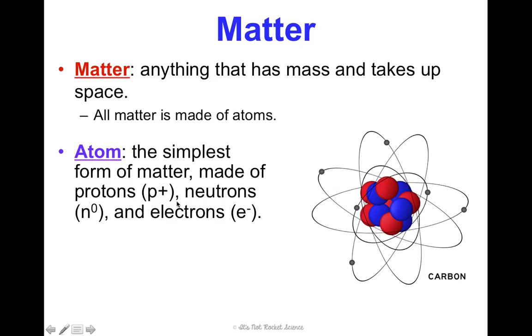Atoms also contain neutrons, which have a neutral charge, so they are N0, and then electrons, which are E-, that have a negative charge.